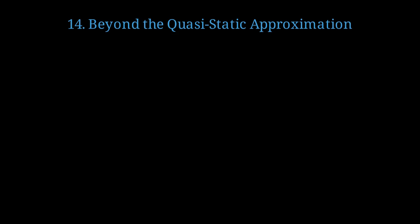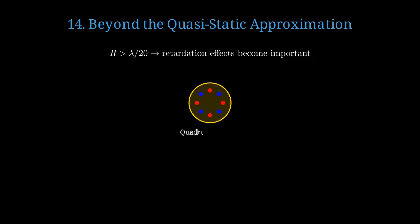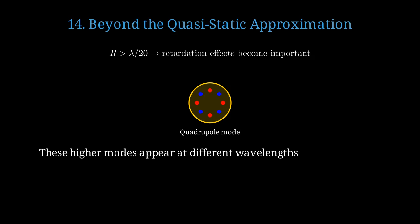For larger particles, the simple dipole approximation breaks down. When the particle radius exceeds wavelength divided by 20, retardation effects become important and higher order multipole modes appear. For larger particles, we see higher order modes like quadrupole resonances, where the charge distribution has more complex patterns. These higher order modes appear at different wavelengths, creating multiple peaks in the spectrum and richer optical behavior.